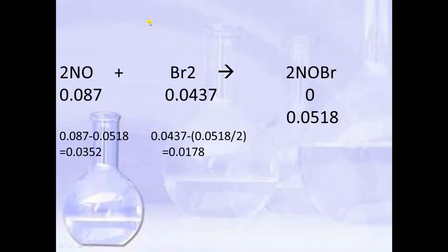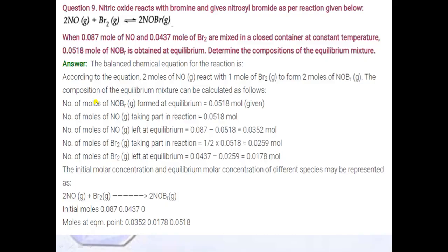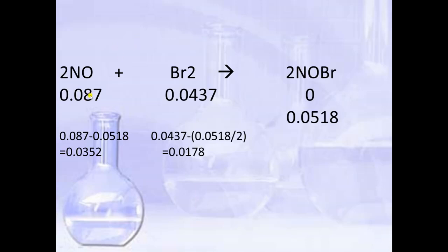Write down the equation. The initial number of moles of NO is 0.087. In this question, volume is not mentioned, so we assume it is 1 litre. So 0.087/1 = 0.087 is the initial concentration of NO, and 0.0437 is the initial concentration of bromine. Initial concentration of product is 0.